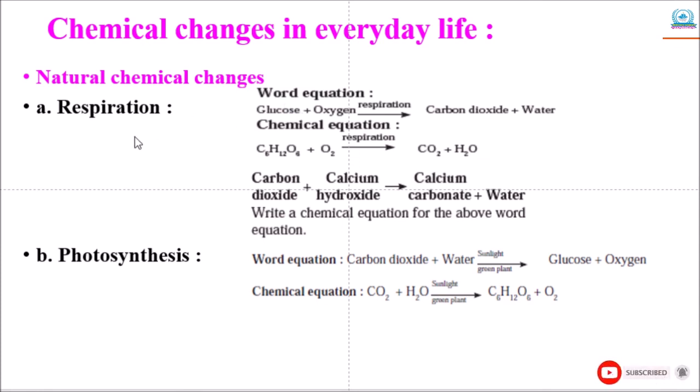Next natural chemical change is photosynthesis. You know that green plants perform photosynthesis in sunlight. A word equation and chemical equation can be written for this natural chemical change: carbon dioxide plus water in presence of sunlight in green plants gives glucose plus oxygen. Chemical equation: CO2 plus H2O in presence of sunlight gives C6H12O6 as glucose and oxygen is liberated.